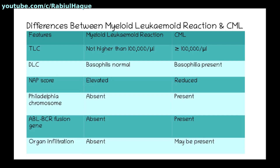Regarding the NAP score, it is elevated in myeloid leukemoid reaction and reduced in chronic myeloid leukemia. The Philadelphia chromosome and ABL-BCR fusion gene are absent in myeloid leukemoid reaction but present in chronic myeloid leukemia. Regarding organ infiltration, it is absent in myeloid leukemoid reaction but may be present in chronic myeloid leukemia.